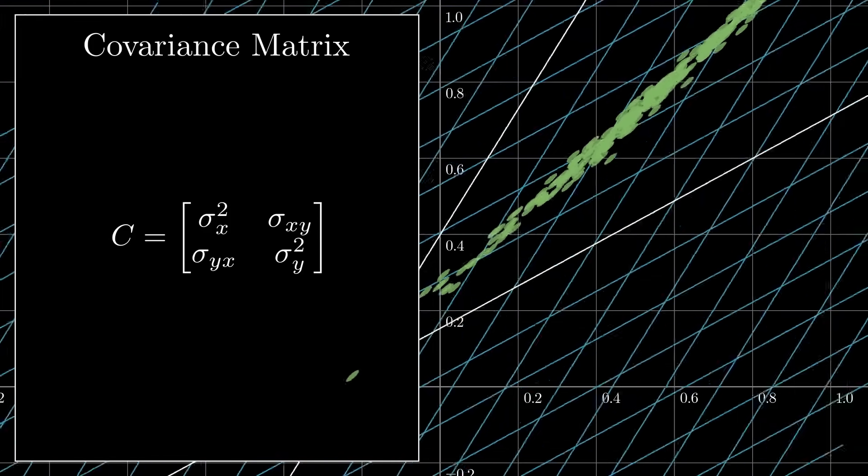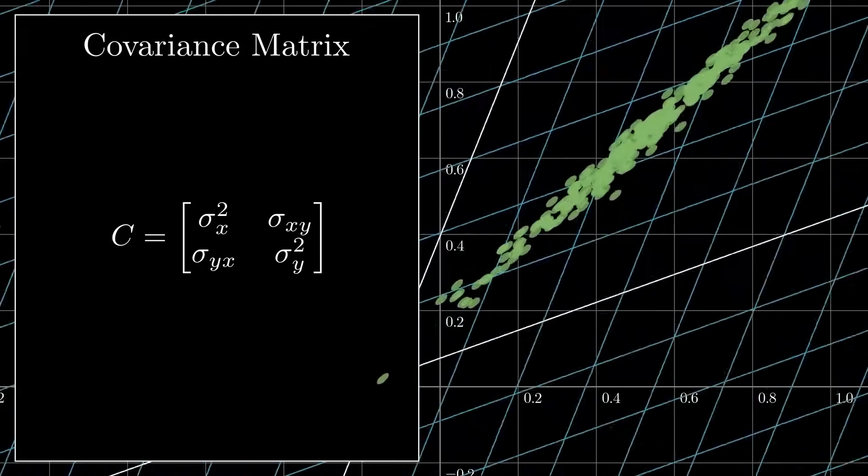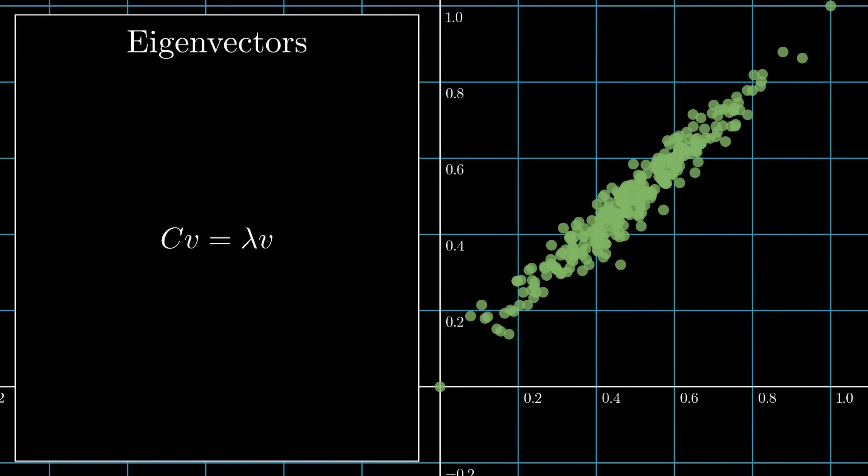The second step is to find the eigenvectors of the covariance matrix, which are the vectors whose direction remains unchanged when the matrix is applied to them. These are precisely the vectors that satisfy this equation. Solving for these vectors is a very common task in linear algebra and can be done using various methods. Once we have the eigenvectors, we sort them in descending order by their eigenvalues. The eigenvectors with the largest eigenvalues are our principal components.